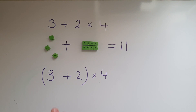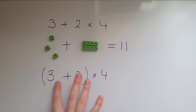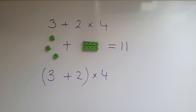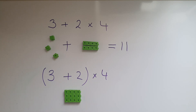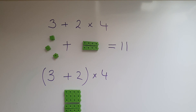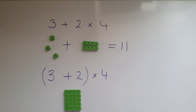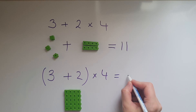In that case, with brackets, it means 5 lots of 4. So 3 lots of 4 and 2 lots of 4 join together to make 5 lots of 4, which is equal to 20.